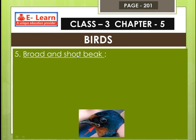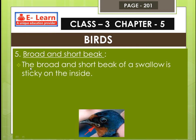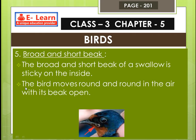Number 5: broad and short beak. The broad and short beak of a swallow is sticky on the inside. The bird moves round and round in the air with its beak open, and this beak helps them catch insects while flying.